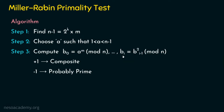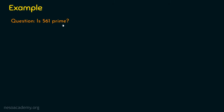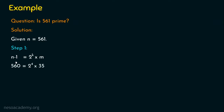Let's dive into the example. The question is: is 561 prime? You may recall from the last presentation that Fermat's algorithm passed 561 as a prime number, but actually 561 is a composite number. Let's see what this algorithm says. Here n equals 561. In step one, n minus 1 equals 560, and we rewrite 560 as 2 to the power 4 times 35. So k equals 4 and m equals 35.